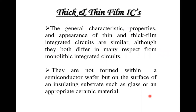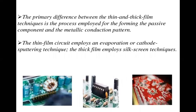The second type is thin and thick film ICs. Unlike monolithic ICs, thin and thick film ICs are not formed within a semiconductor wafer but on the surface of an insulating substrate such as glass or ceramic. The primary difference between thin and thick film is the process: thin film uses evaporation or cathode sputtering techniques, while thick film uses silk screen techniques.